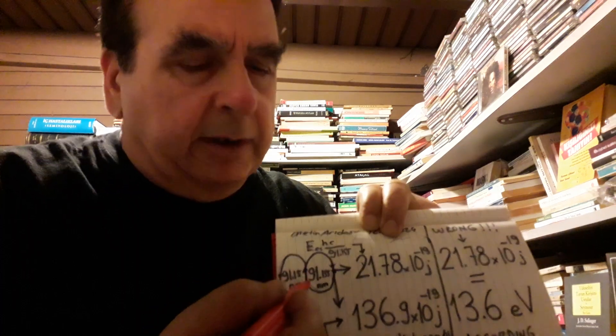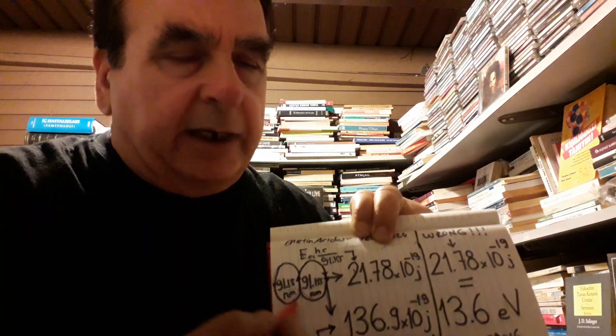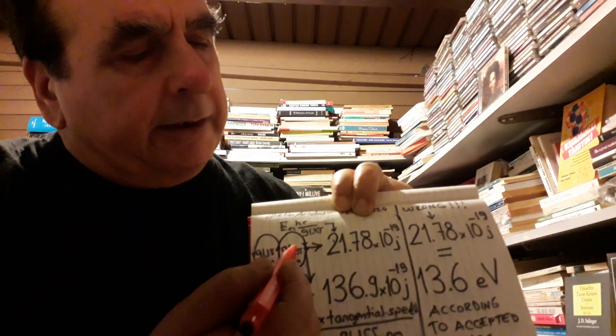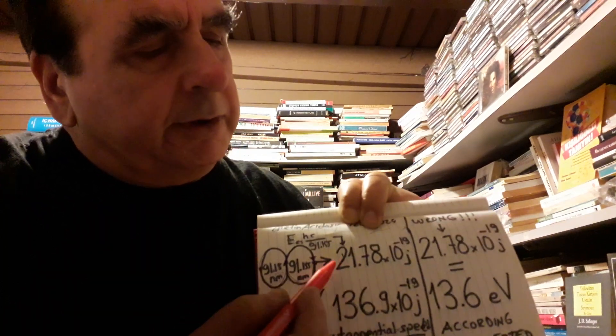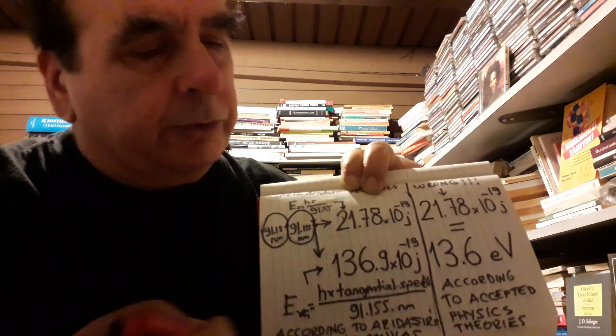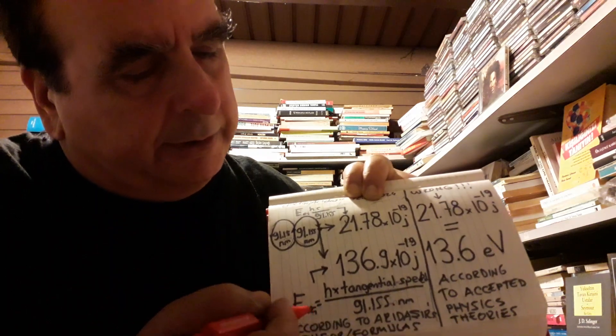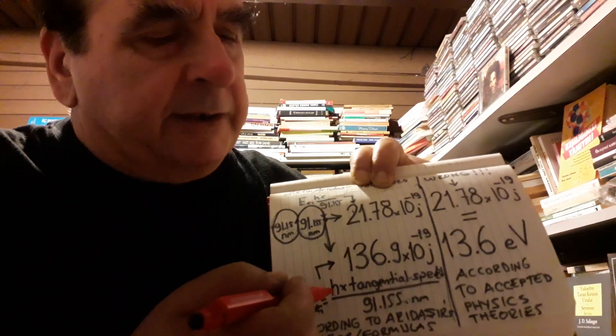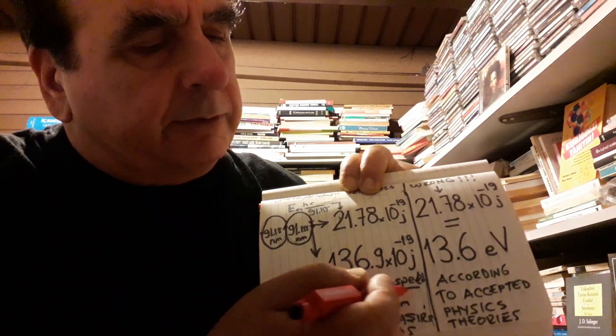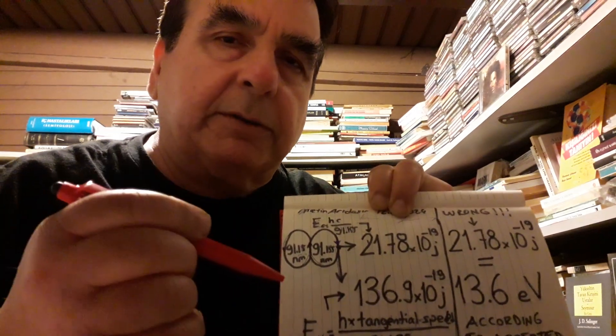This is hydrogen inside of its proton, and it is at rest and cycling at first cycle. Speed of light direction: 21.78×10^-19 joules. And tangential velocity component here—Planck's constant multiplied by tangential velocity, tangential velocity is 1,884,000 km per second, 6.20 times greater than speed of light, divided by 91.155.